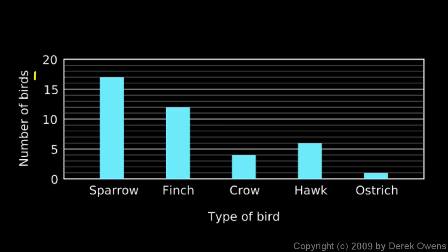The number of birds is shown on the vertical axis. For example, the number of sparrows he saw — this line right here — would be 17, just two above the 15 mark. A bar graph isn't too hard to read.